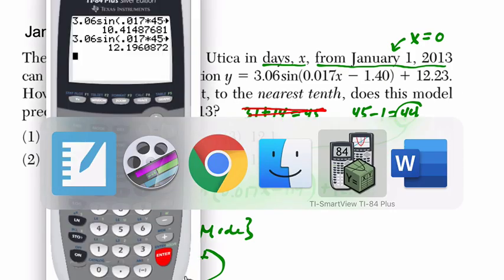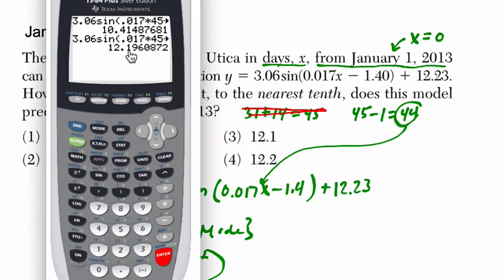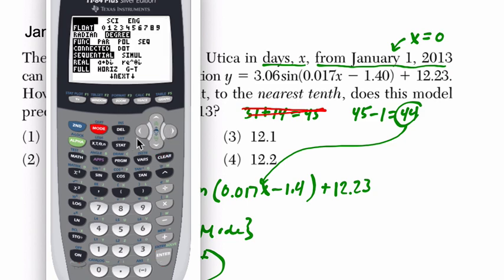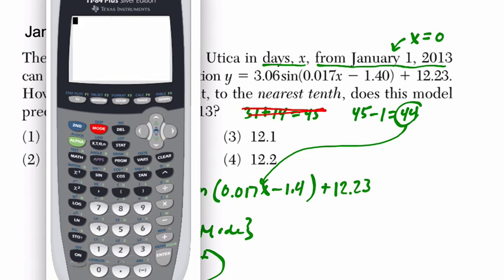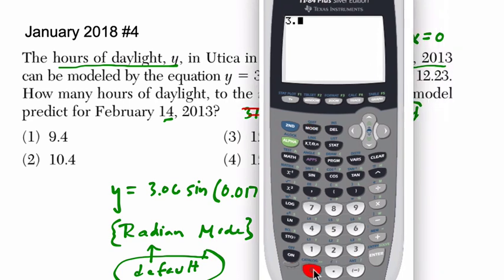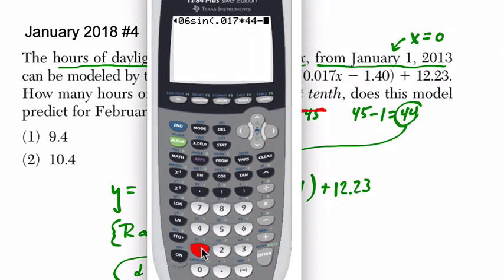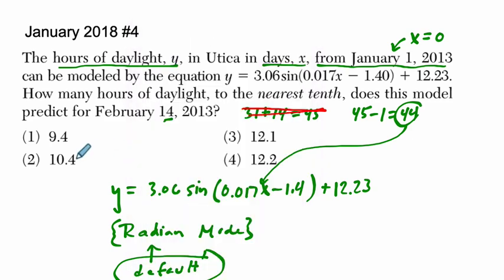Now, let me pull up the calculator. I'm going to clear that off, and I'm going to press mode, and I'm going to switch over to radian. And then I'm just going to plug things in. We've got 3.06 times the sine of 0.017 times 44, and then minus 1.4, and then plus 12.23. Okay, enter that, and here I get 10.4. This is our answer right here.